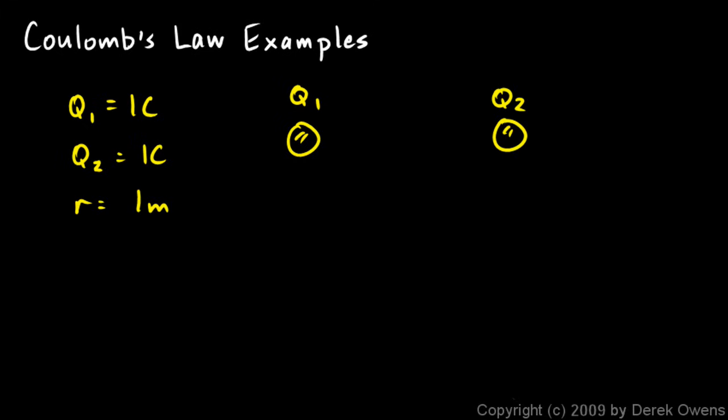In this first example, we're given two charges, Q1 and Q2, and each of them has a magnitude of one Coulomb. The distance between them is one meter. We'll make a note of that here on the picture, and we're told to find the electrostatic force between them.